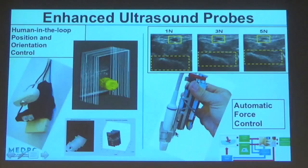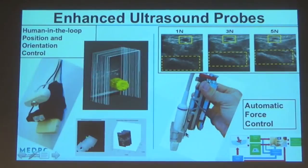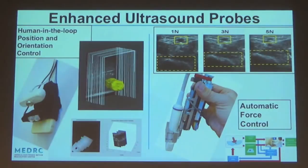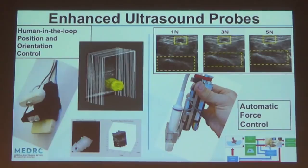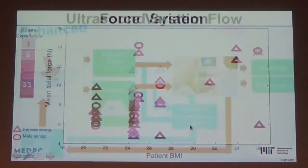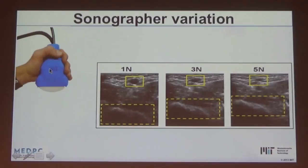Q: How is the force probe constructed? A: The probe is mounted purely to a stage through a six-axis force sensor, so in effect you're holding the force sensor rather than the probe directly, and the clamshell you hold is attached to the probe purely through that force sensor.